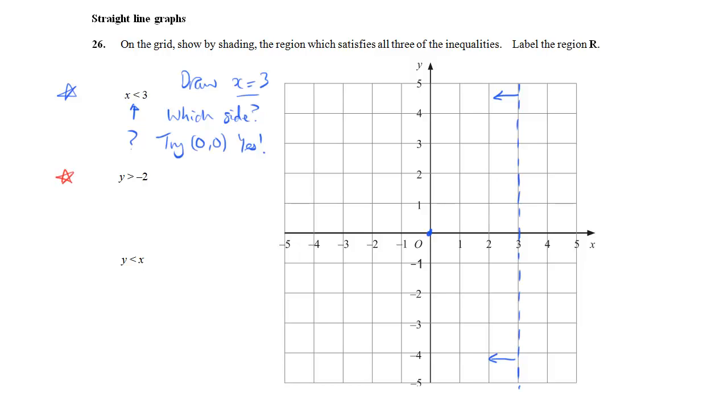The second one, y is greater than minus 2, is going to work almost identically. The line that we need is y equals minus 2. So we find minus 2 on the y-axis and we plot ourselves a horizontal line there. Anywhere on that line, y has the value minus 2. Then we are going to try, again let's just try the origin.